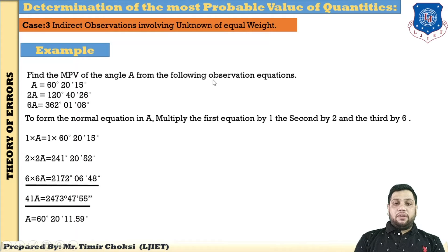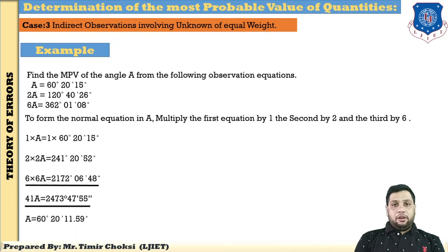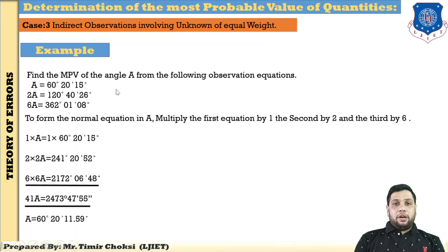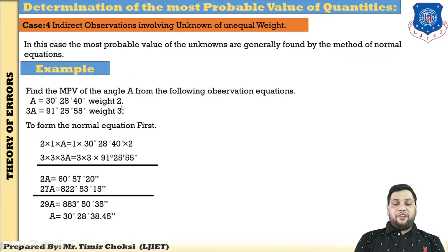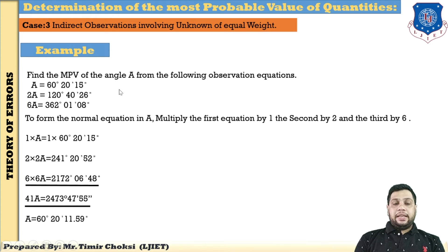Find the most probable value of angle A from the following observation equations involving A, 2A, and 6A. First, decide whether this is direct or indirect observation — since the angle is multiplied by some coefficient, this is indirect observation. Next, decide equal or unequal weight — since no weight is given, it is equal weight. So this example is based on Case 3: indirect observation of equal weight.